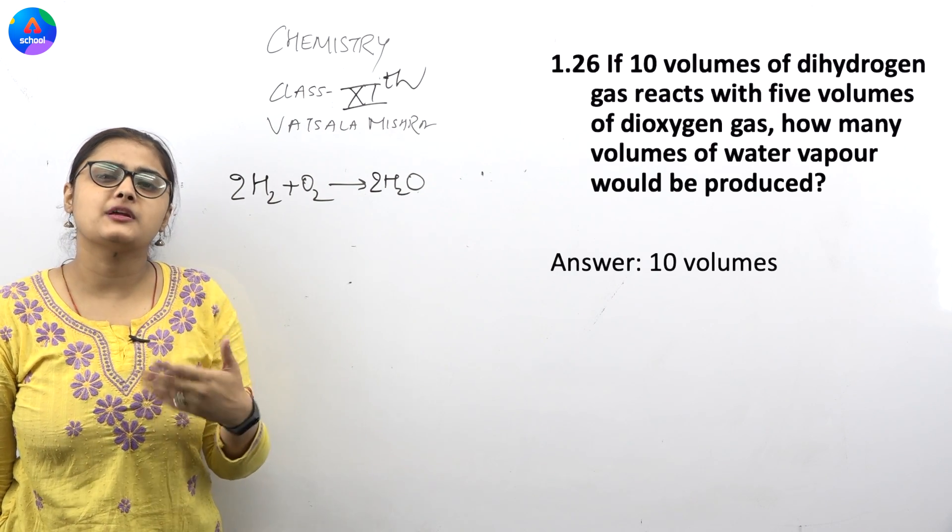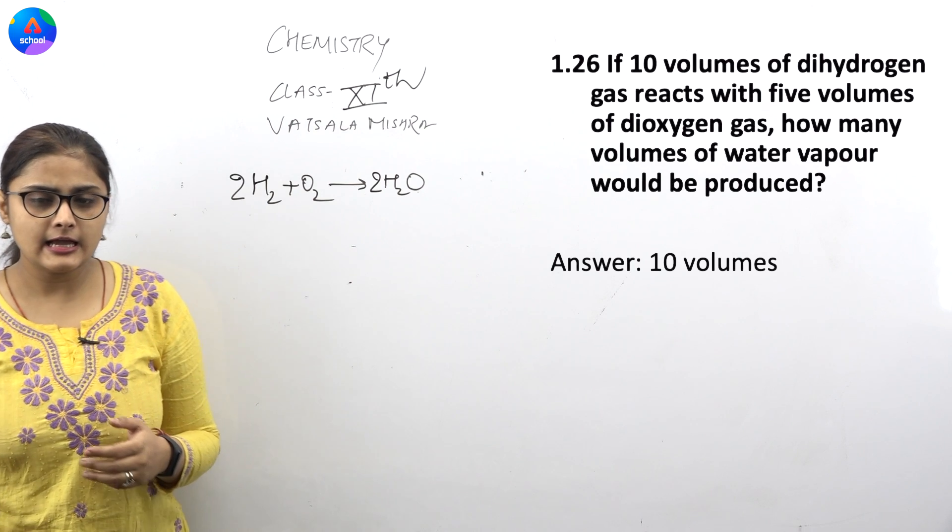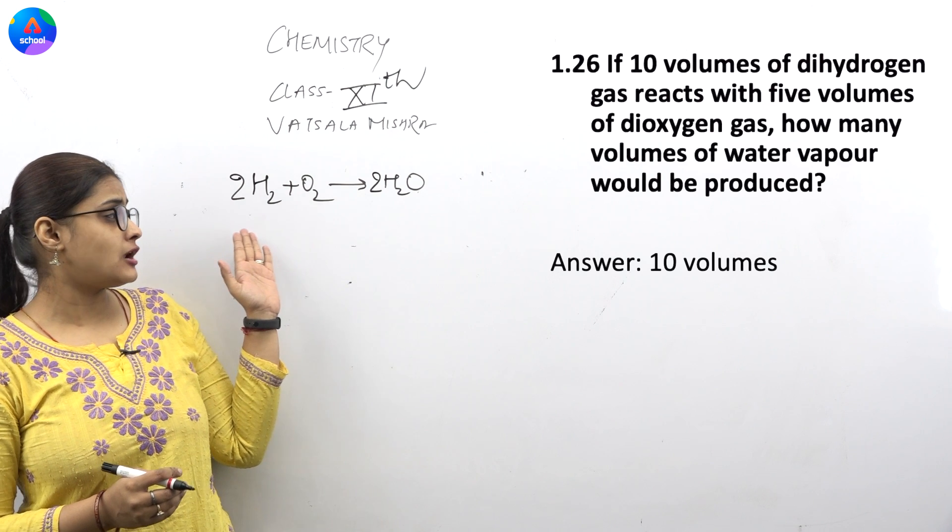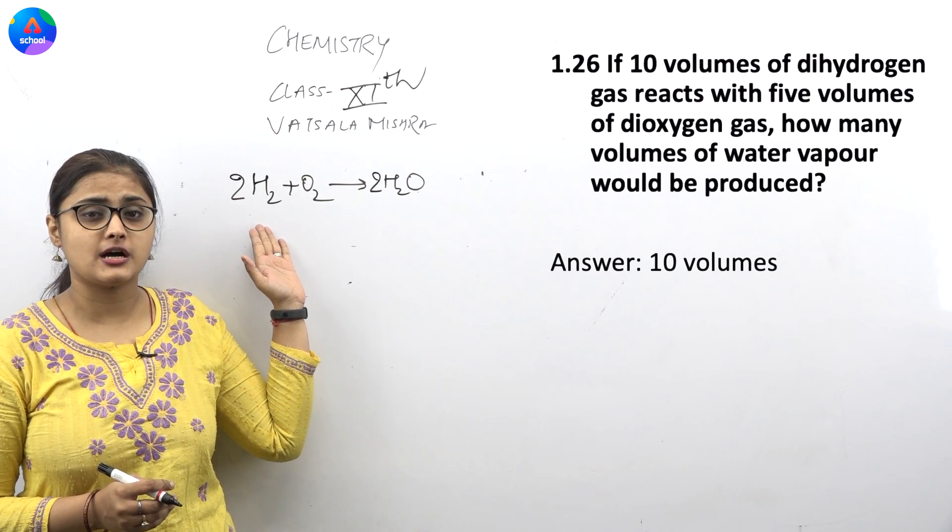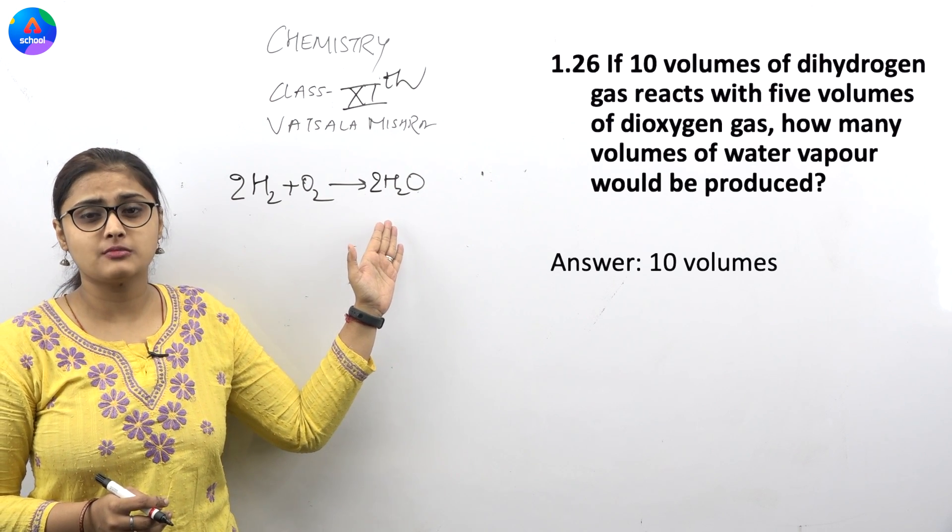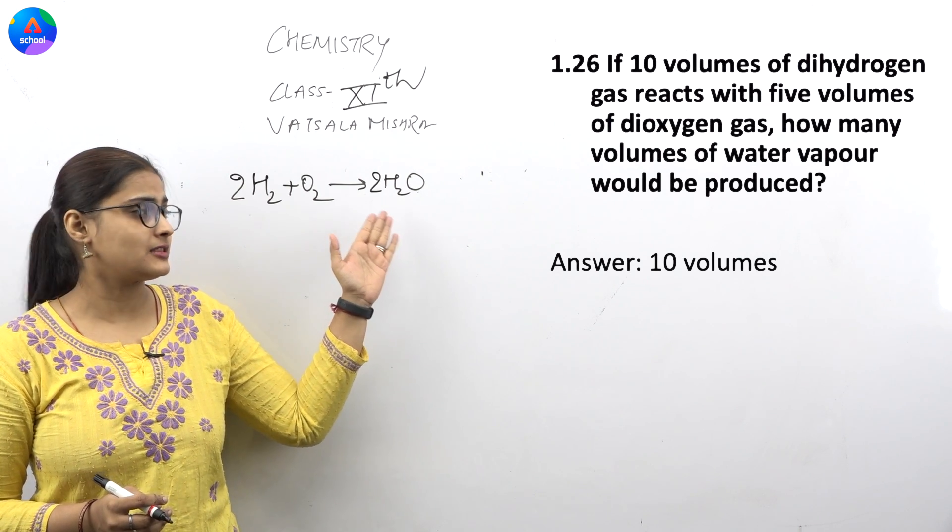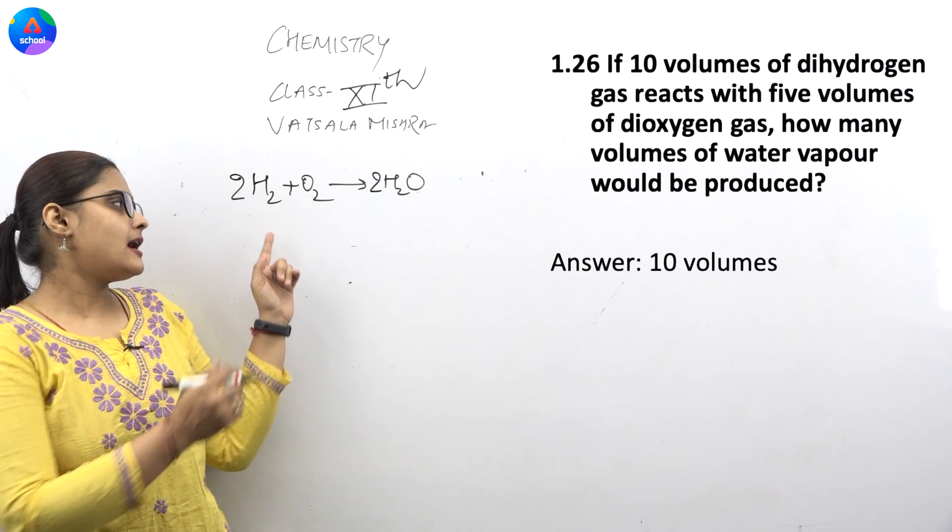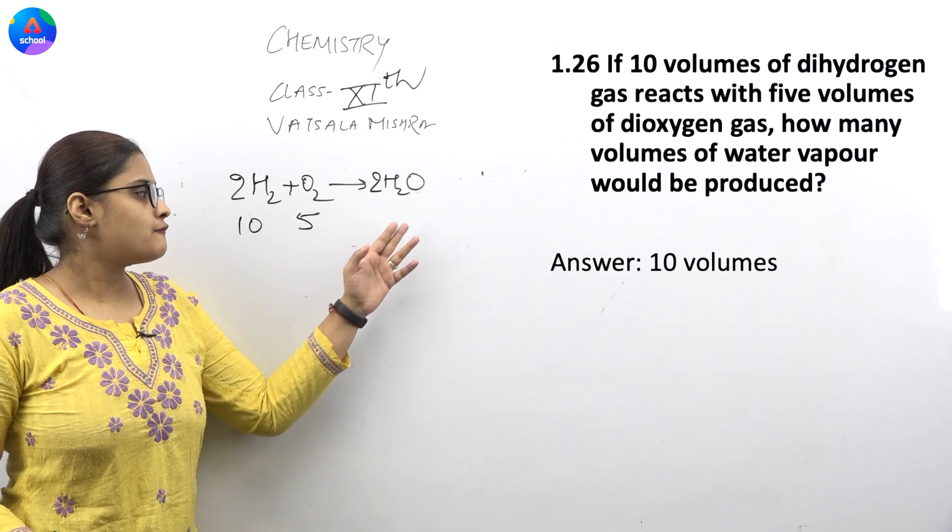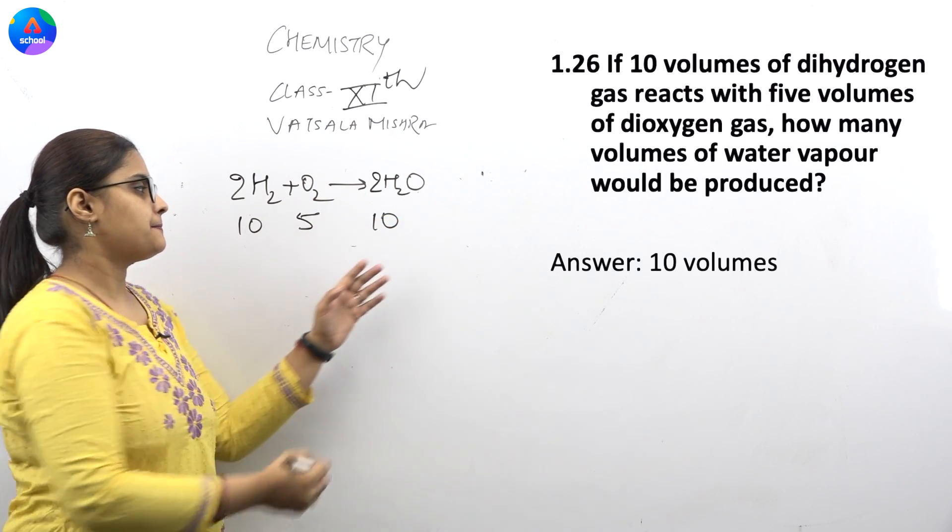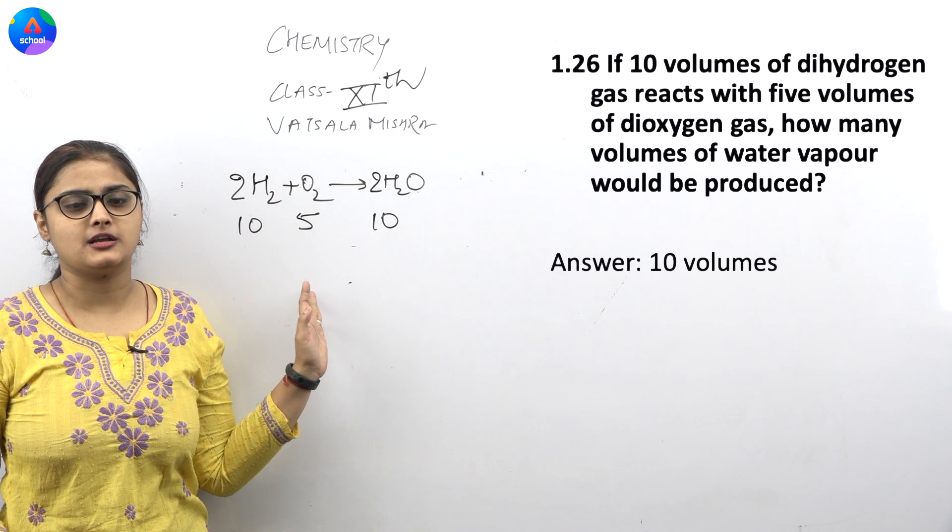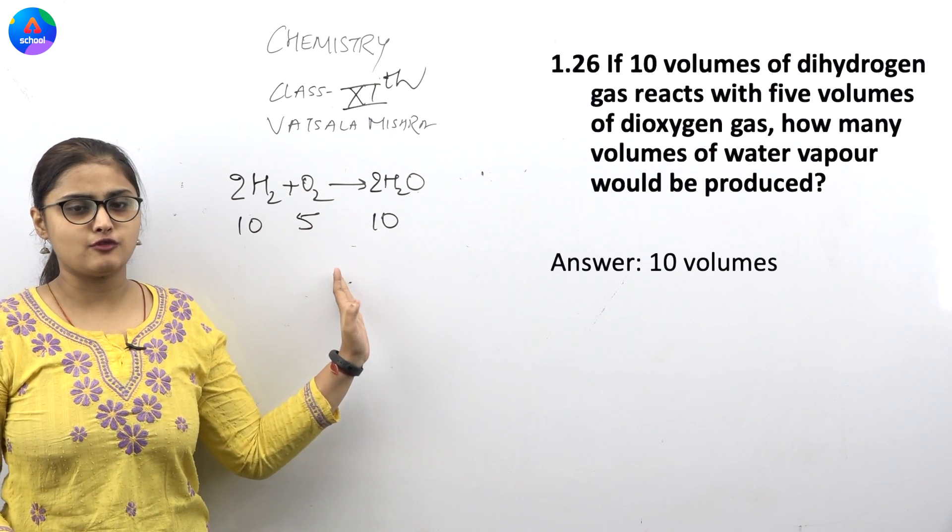If you have 10 volumes of dihydrogen and 5 volumes of oxygen, then if you have 2 moles of hydrogen with 1 mole of oxygen, you have 2 volumes of hydrogen oxide, that means water.